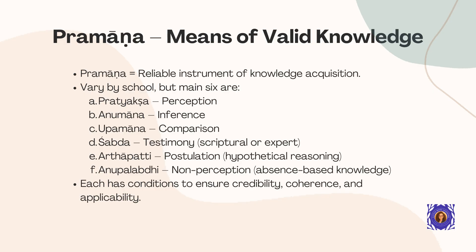Now let's turn to pramana, which refers to the reliable instruments or tools we use to acquire knowledge. Different philosophical schools recognize different numbers of pramanas, but there are six main ones. First is pratyaksha — direct perception through our senses. Second is anumana — inference or logical reasoning. Third is upamana — comparison or analogy. Fourth is shabda — testimony from trustworthy texts or experts. Fifth is arthapatti — postulation, reasoning about something that must exist to explain what we observe. And sixth is anupalabdhi — non-perception, knowing something by noticing its absence. Each of these knowledge tools has specific conditions to ensure they are used correctly and provide reliable knowledge.